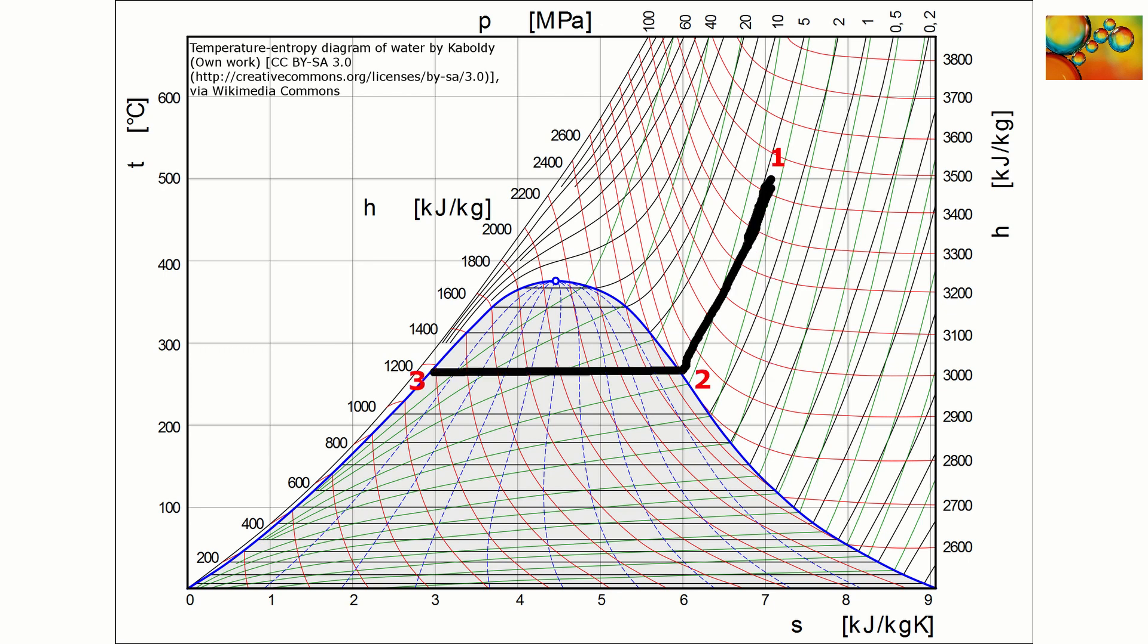This slide shows an isobaric three-state process that starts from state 1 in the superheated steam region and then goes to state 2, which is a saturated vapor, and onwards to state 3, which is a saturated liquid. Observe that between states 2 and 3, not only the pressure remains constant, but also the temperature, because the line connecting points 2 and 3 is horizontal. We know that the horizontal line in this diagram represents an isothermal process. Therefore, between points 2 and 3, the process is at the same time isobaric and isothermal.